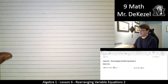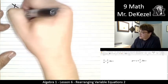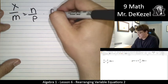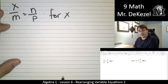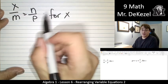Let's keep going. We have next x over m is equal to n divided by p. We are solving in this case for x. So when we get x all by itself, we need to get rid of the m on this side.